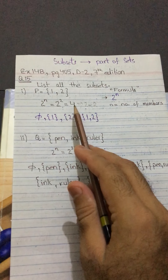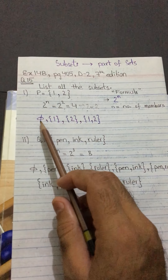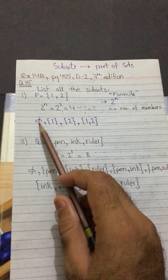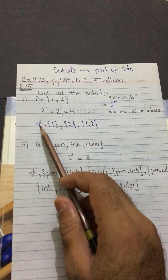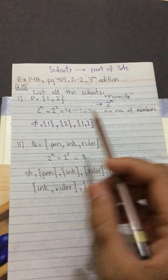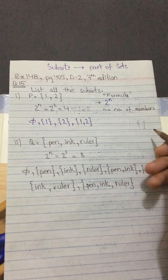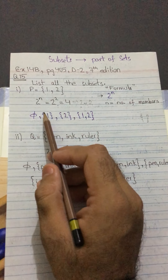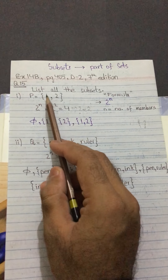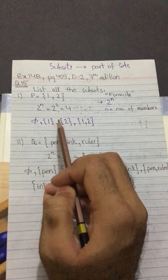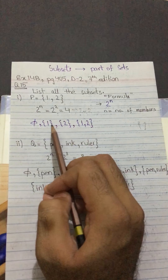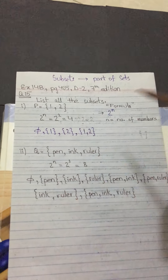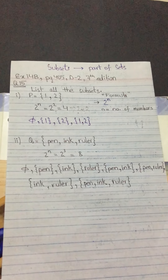Now I know there will be 4 subsets, so I will start listing them. The first subset will always be an empty set or null set — that is the rule. You can represent it with the empty set symbol or two empty brackets. After the empty set, I write each member individually: first 1 alone, then 2 alone.